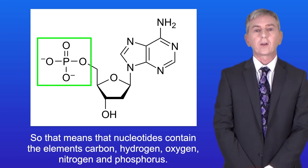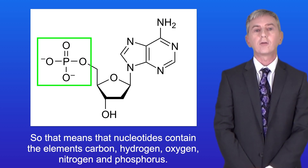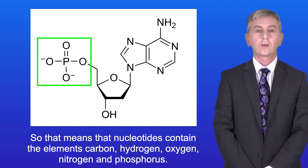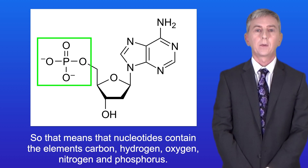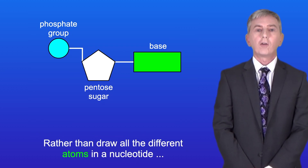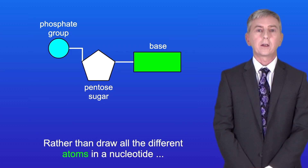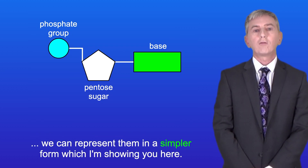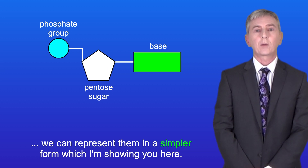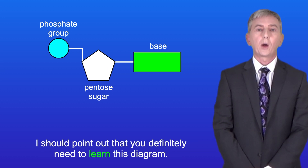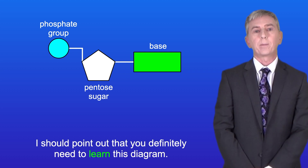That means nucleotides contain the elements carbon, hydrogen, oxygen, nitrogen, and phosphorus. Rather than draw all of the different atoms in a nucleotide, we can represent them in a simpler form, which I'm showing you here. You definitely need to learn this diagram.